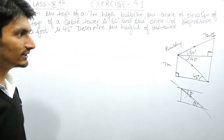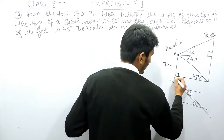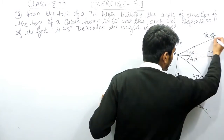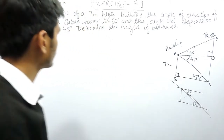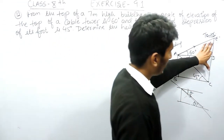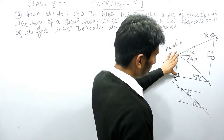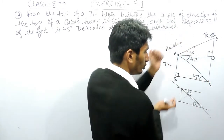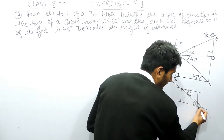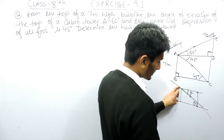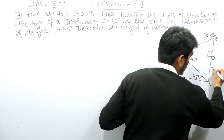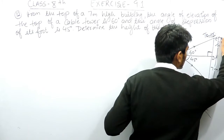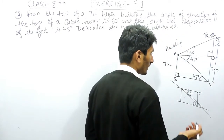Now there are two triangles — if I name them ABC and ADE, these are the two triangles. You need to find the height of the tower. The building is 7 meters, so this side must also be 7 meters, because these two lines are parallel and the perpendicular distance between parallel lines is always equal. So if I find the remaining height H, then 7 plus H will be my answer.